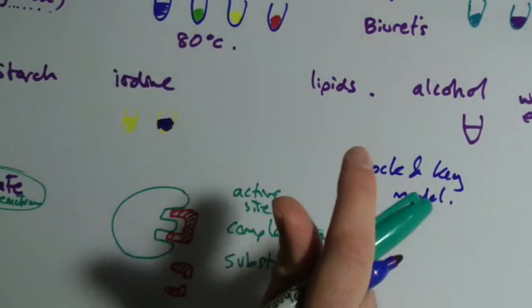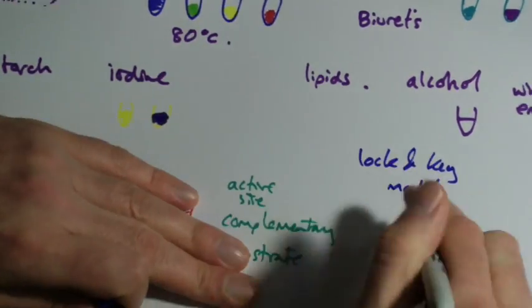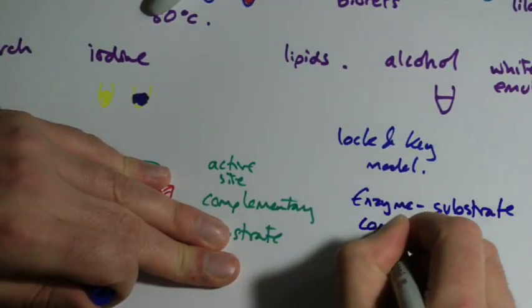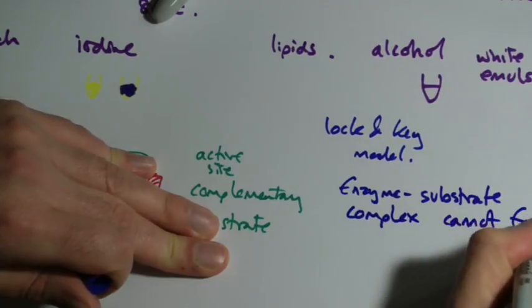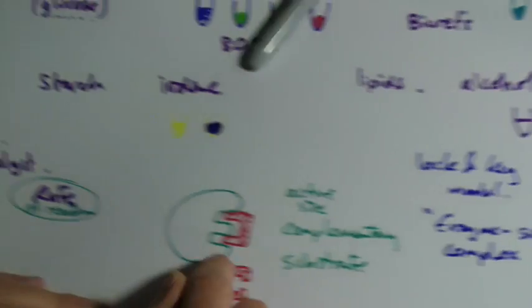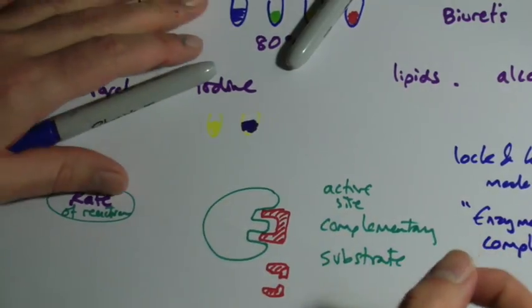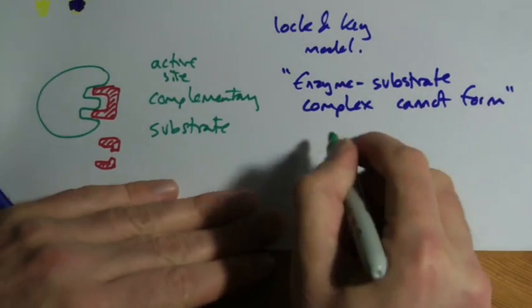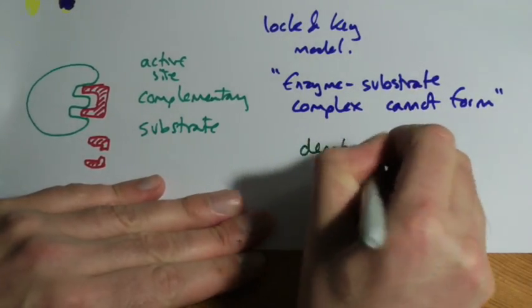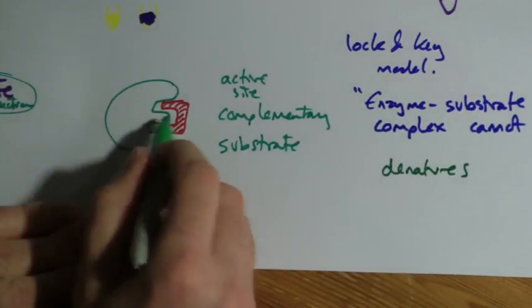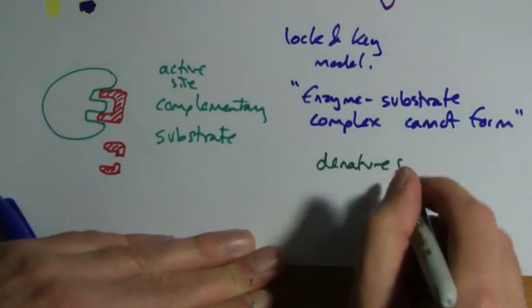Now there's another really useful term I'm going to give you here, which is the enzyme substrate complex cannot form. Why is that useful? The enzyme substrate complex means the enzyme and the substrate are stuck together, like this. So when it fits in, like the key going into the lock, when they're both together, you'd call that the enzyme substrate complex. Why is it so useful? Because so many questions are a version of this. If you put this enzyme in a high temperature where it denatures, remember denature means that the active site changes shape, not the substrate on the enzyme, the active site changes shape. If that changes shape, the enzyme substrate complex cannot form.